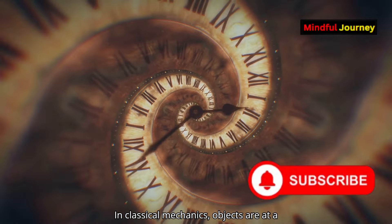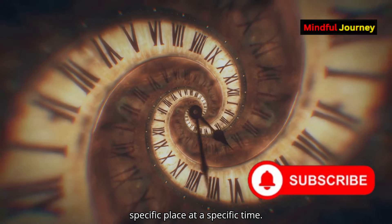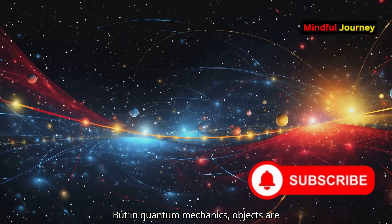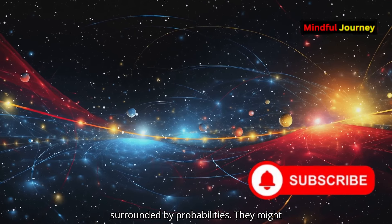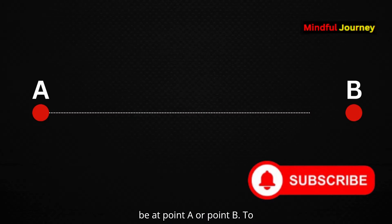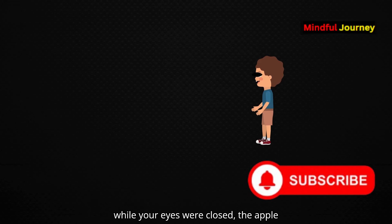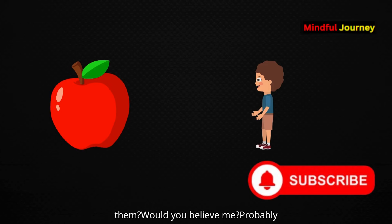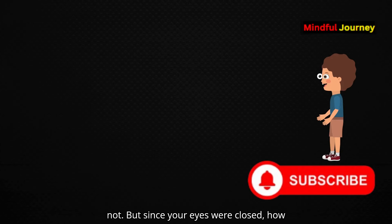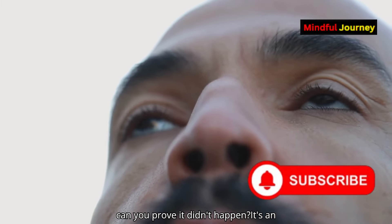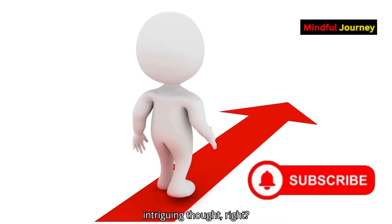In classical mechanics, objects are at a specific place at a specific time. But in quantum mechanics, objects are surrounded by probabilities. They might be at point A or point B. To illustrate, let's say I place an apple in front of you. Now close your eyes and open them again. You'd see the apple still there. But what if I told you that while your eyes were closed, the apple disappeared and reappeared as you opened them? Would you believe me? Probably not. But since your eyes were closed, how can you prove it didn't happen? It's an intriguing thought, right?